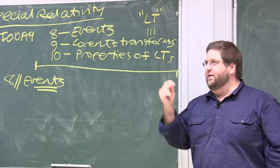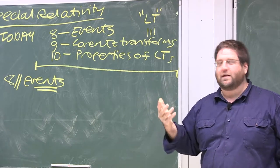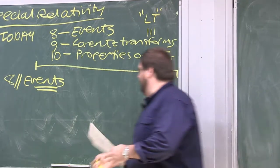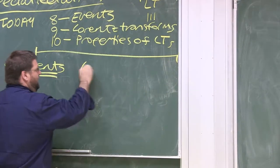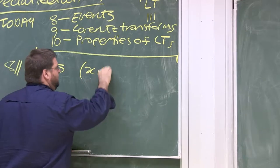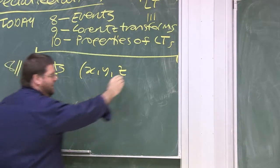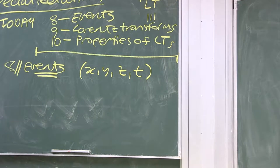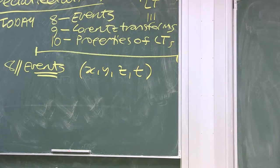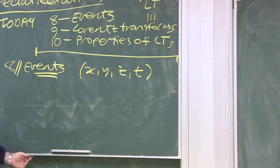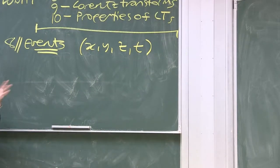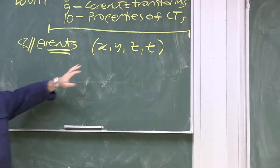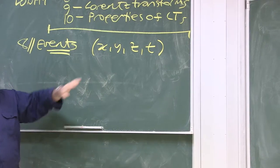I want to begin with the event. An event is just this — it's a click. Something that happens at a particular point in space, at a particular instant of time, according to some observer with a particular reference frame, a particular x, y, z, t. We restrict ourselves to inertial reference frames, non-accelerated frames, and an event is a click.